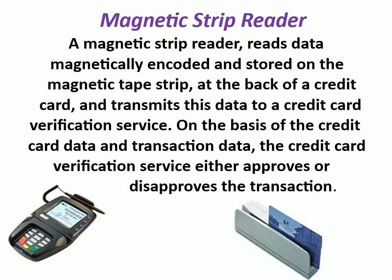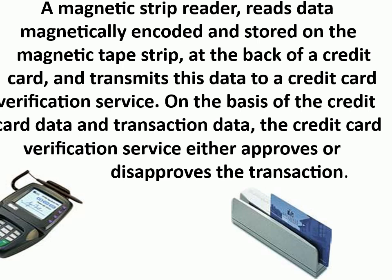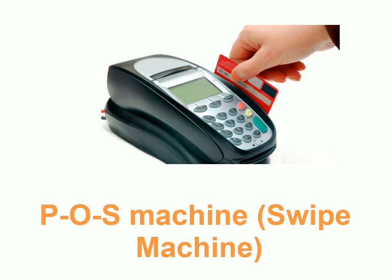Magnetic strip reader — a magnetic strip reader reads data magnetically encoded and stored on the magnetic tape strip at the back of a credit card, and transmits this data to a credit card verification service. On the basis of the credit card data and transaction data, the credit card verification service either approves or disapproves the transaction. POS machine, or swipe machine.